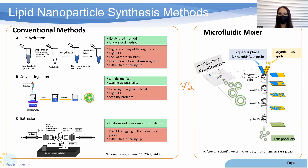The next question is how to prepare lipid nanoparticles. Conventional methods include film rehydration and solvent injection. However, lipid nanoparticles generated by these methods usually have large PDI and low reproducibility. Extrusion is the traditional way to enhance the homogeneity of lipid nanoparticles; however, it needs extra steps and it is difficult to scale up.